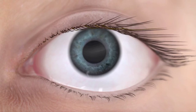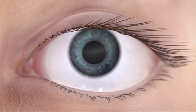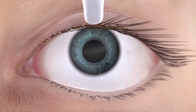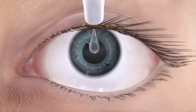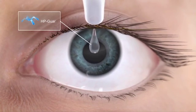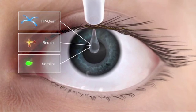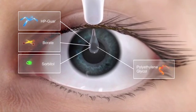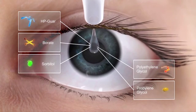In treating ocular surface disease, a therapy that allows the ocular environment to return to normal is the first step. The intelligent delivery system of Cystain Ultra, consisting of HP-GUAR, borate and sorbitol, enables the ingredients polyethylene glycol and propylene glycol to lubricate and provide protection.